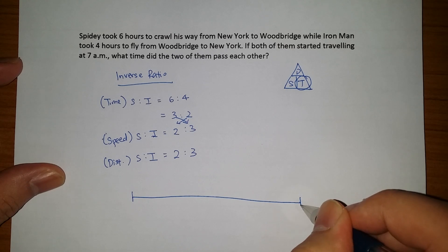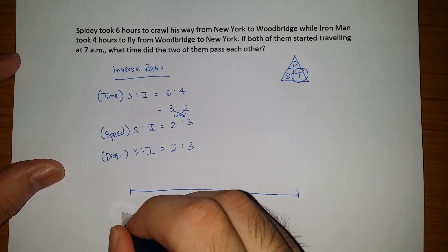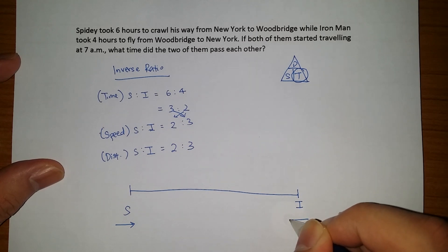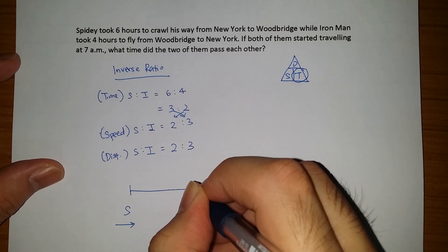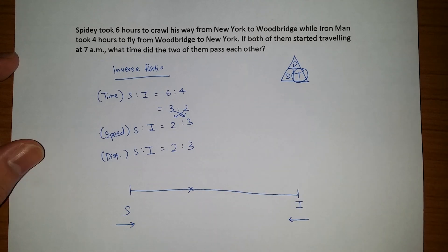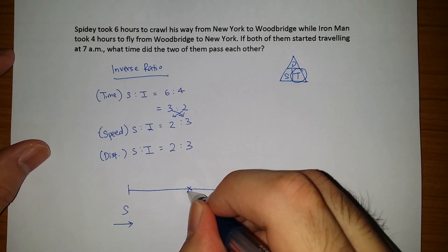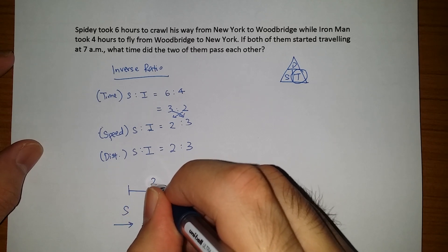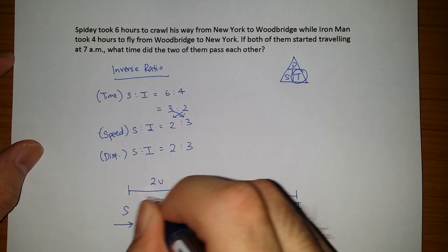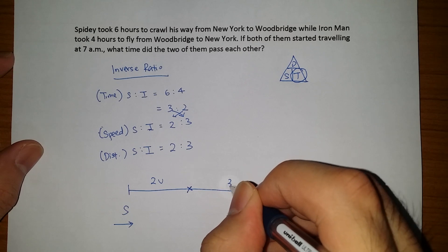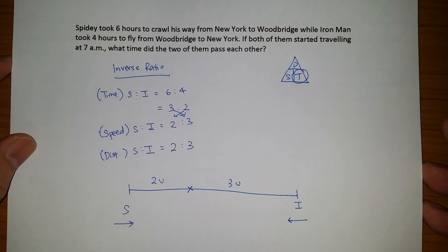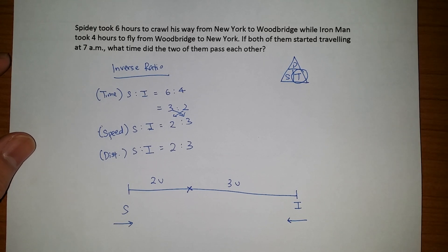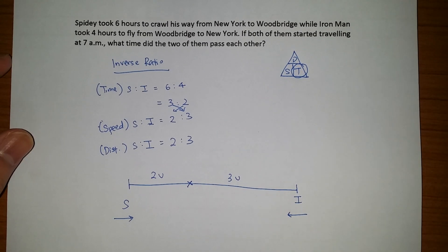So in terms of the distance graph model, we would do this is Spidey and Iron Man. Spidey will move here, and Iron Man will move here. They will meet somewhere over here instead of the middle because we know that Spidey is slower than Iron Man. So this is the point that they will meet each other. So what we can see here is that Spidey takes 2 units to travel from here to here, while Iron Man takes 3 units to travel from here to here. So what does this mean is that the total distance is 5 units.